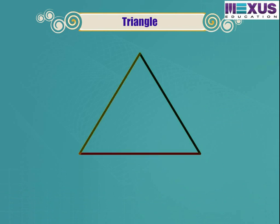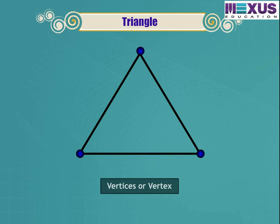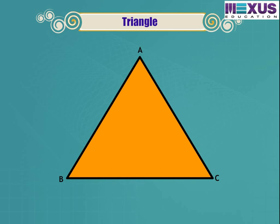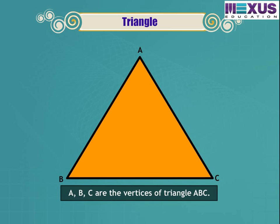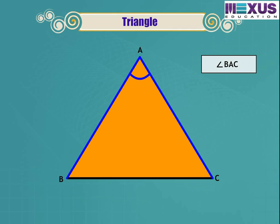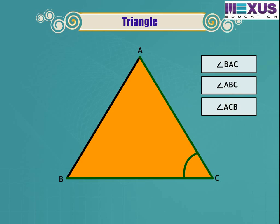A simple closed figure made by three line segments is called a triangle. The line segments are called the sides of the triangle, and the points at which two line segments meet are called the vertices. Here, three line segments AB, BC, and CA form triangle ABC and are called its sides. A, B, and C are the vertices of triangle ABC, and angles BAC, ABC, and ACB are formed at the vertices.